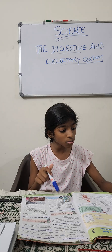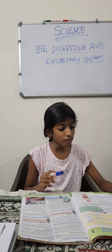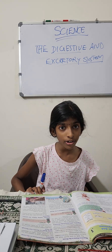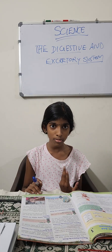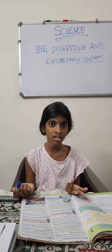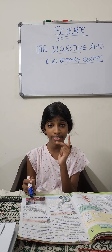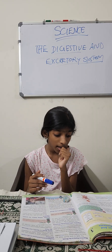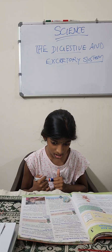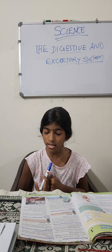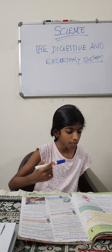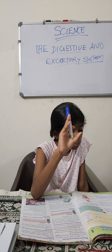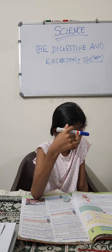Do you know that the human body is made of different organ systems? The body is made of different organ systems: the respiratory system, the nervous system, the circulatory system, the excretory system, and the digestive system. Each of them has a specific job to do.